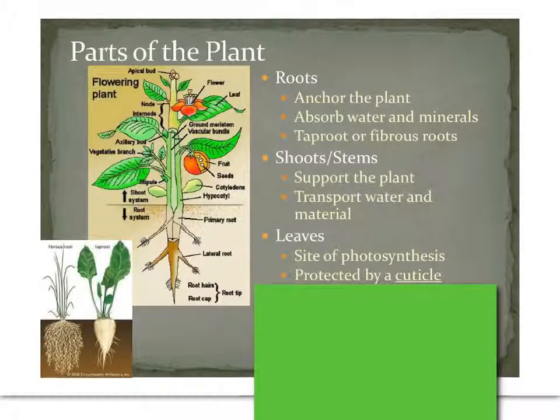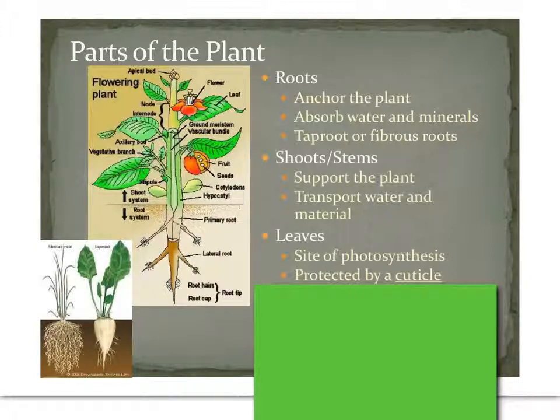One interesting adaptation that leaves have is something called a cuticle — a waxy covering of their leaves to keep them from drying out too much.